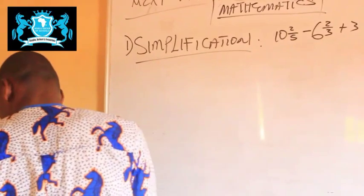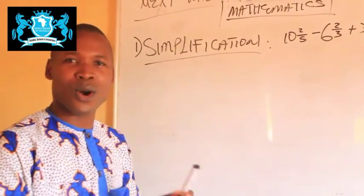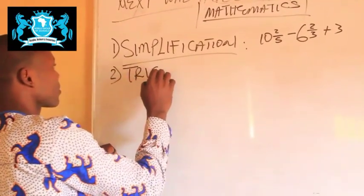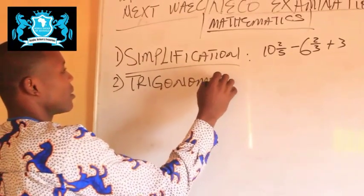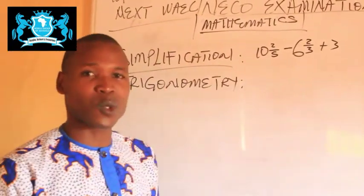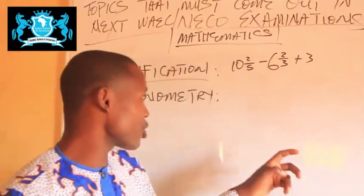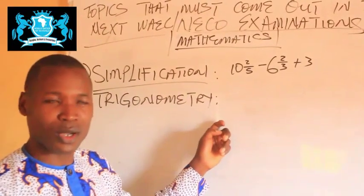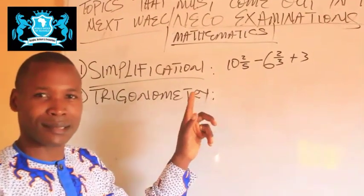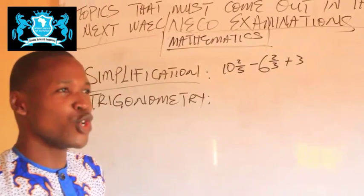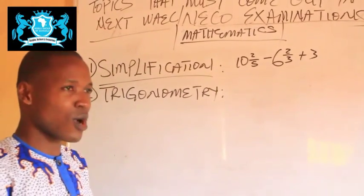The next topic that must come out once WAEC and NECO external examinations are concerned is Trigonometry. Trigonometry involves questions that deal with triangles. If you are writing any of these external examinations, be sure to understand and focus your attention on Trigonometry. If you buy any textbook or WAEC and NECO past questions, you will see that there are a lot of trigonometric questions inside, covering different aspects.